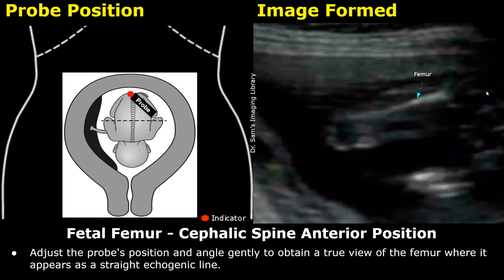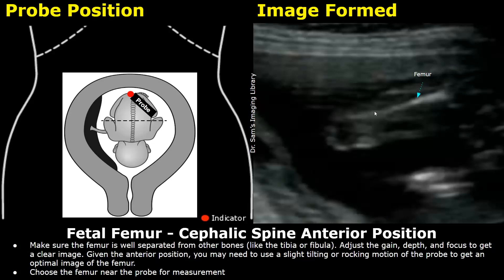You will eventually find the fetal legs. Adjust the probe's position and angle gently to try to obtain a good view of the femur so you can measure the femur length. Make sure to focus on the femur and keep it away from other bones such as the tibia or fibula. Adjust the gain, depth, and focus to get a clear image. You may have to slightly tilt or rock the probe to get a good view of the femur.